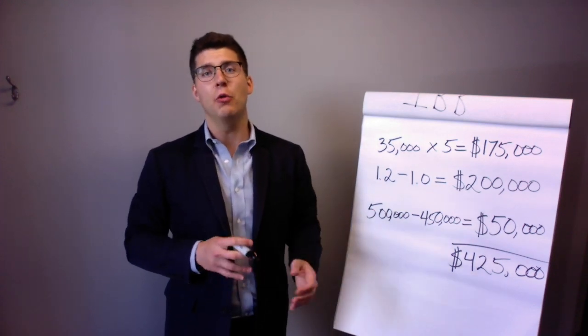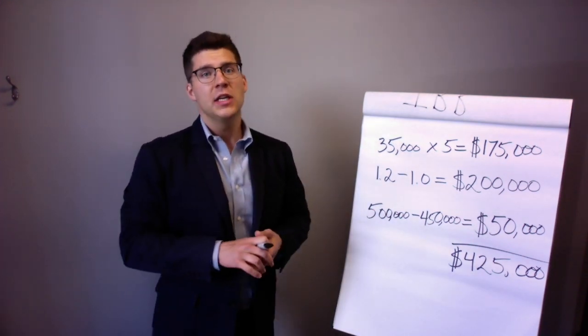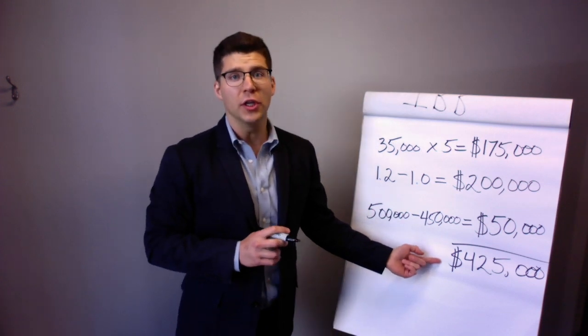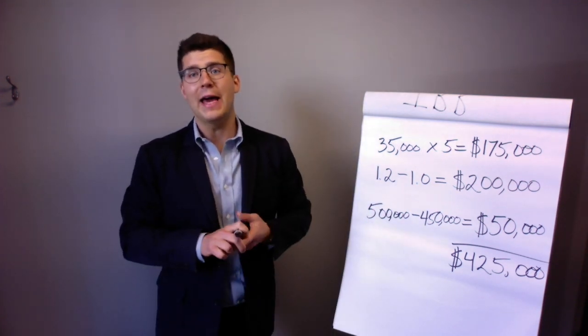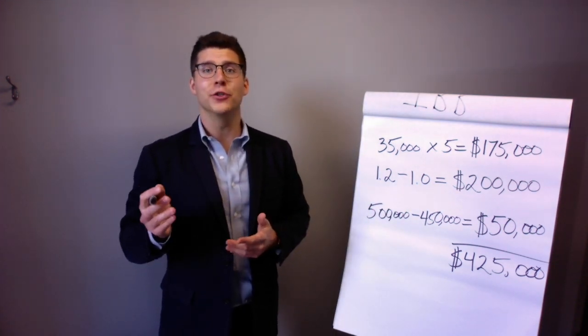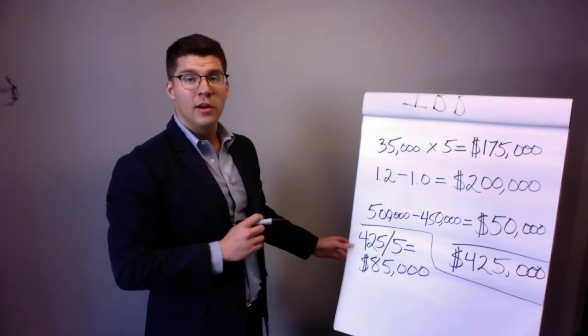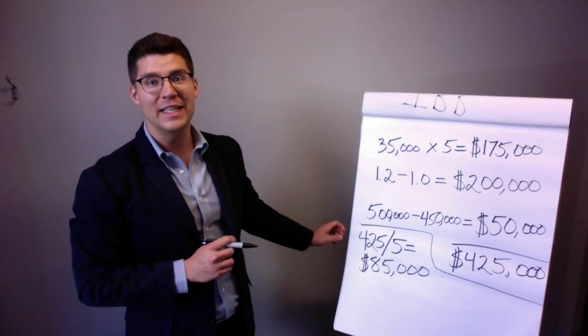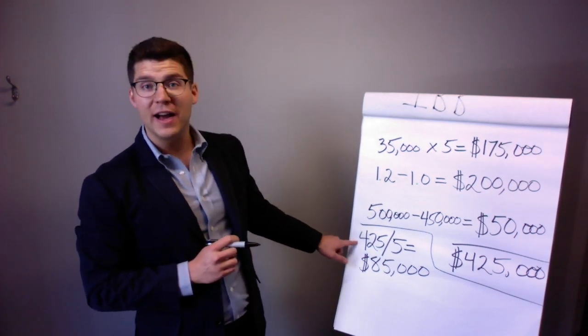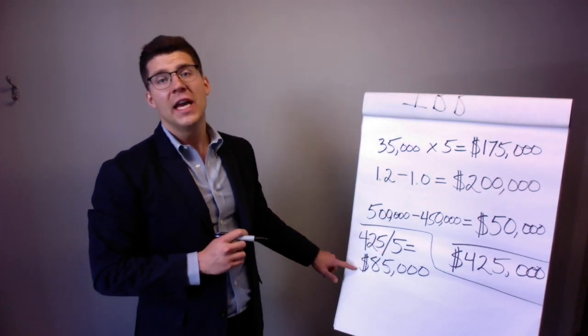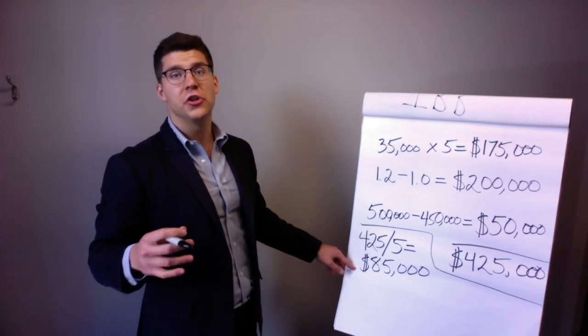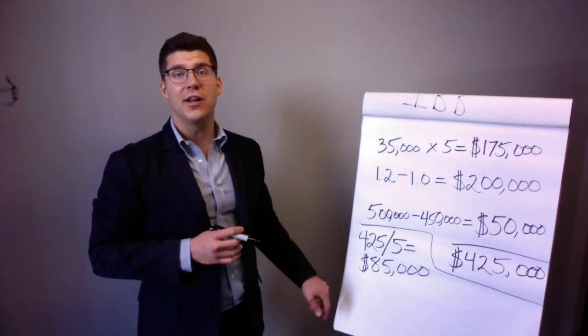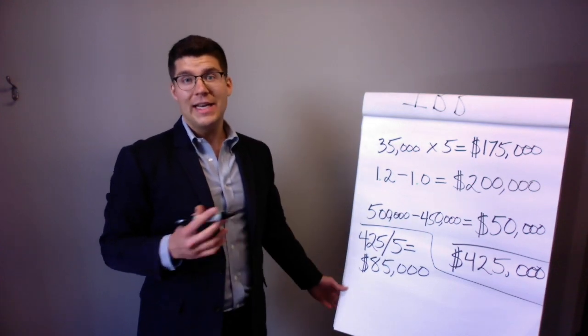But the idea is to figure out what we're getting annually. So now we're going to divide our total return by the number of years we had our investment and we get our average return per year. What I did here is $425,000 divided by five years equals an annual return on average of $85,000 per year.